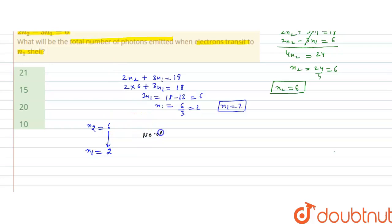Number of photons emitted are calculated by the formula delta N into delta N plus 1 divided by 2, where delta N is N2 minus N1, that is electronic transition has taken place from N2 to N1.